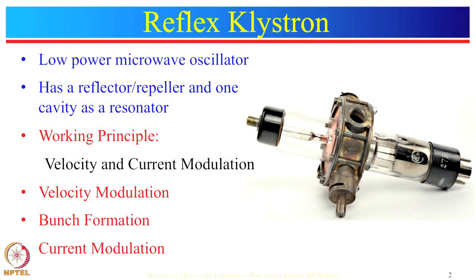Let us begin with reflex klystron. It is a low power microwave oscillator, and to design an oscillator, the first thing we need to know is how oscillations are generated. The answer is that we need to give positive feedback from output to input such that the loop gain is unity. For a klystron, if a fraction of output power is fed back to the input cavity such that the loop gain magnitude is 1 and the feedback path phase shift is 2π or a multiple of 2π, then the klystron will oscillate.